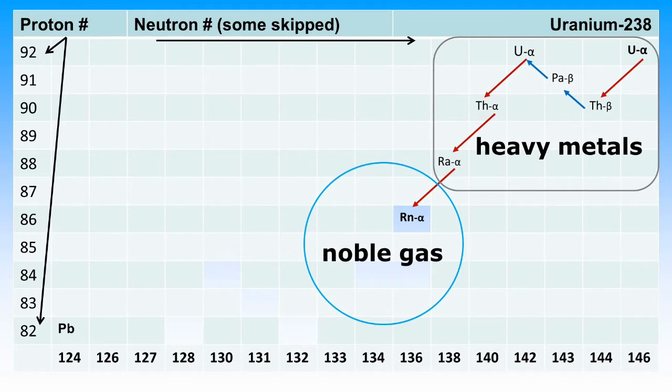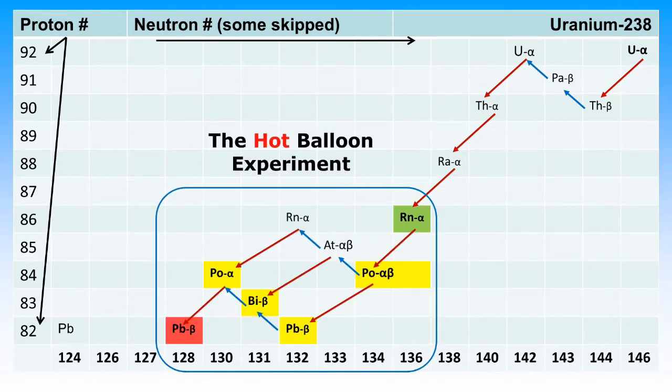Radon-220 may also be present from the thorium-232 decay series in the local environment. But in this case, radon-222 is predominant. The hot balloon experiment starts with radon-222 in the air near where the charged balloon is hanging.